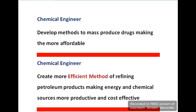The next point is related to petroleum products. In this field, chemical engineers create more efficient methods of refining crude oil. As a result, we get refined petrol to produce energy and other chemicals for different industrial applications.